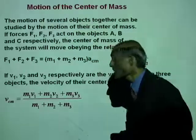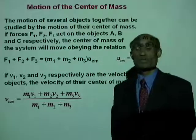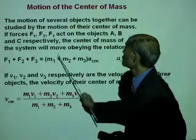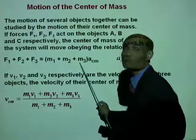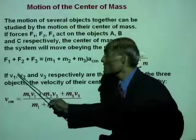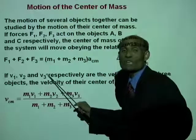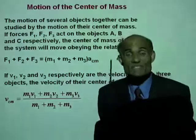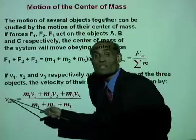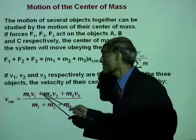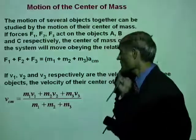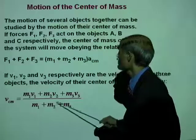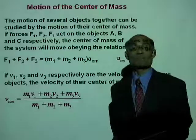This is an important equation that gives you the velocity of the center of mass. If I have three objects of masses M1, M2, M3 moving with velocities V1, V2, V3 respectively, then the velocity of their center of mass is given by V_cm equals M1·V1 plus M2·V2 plus M3·V3, all over M1 plus M2 plus M3.